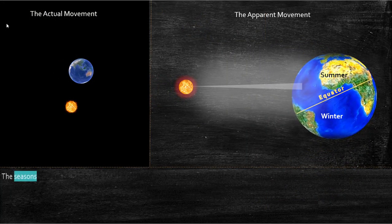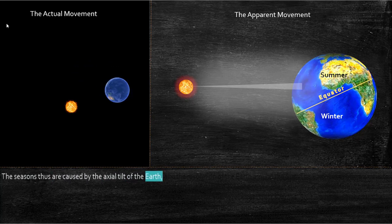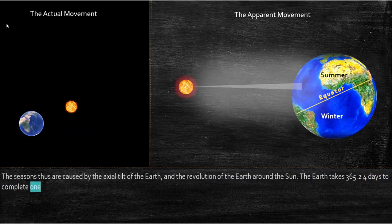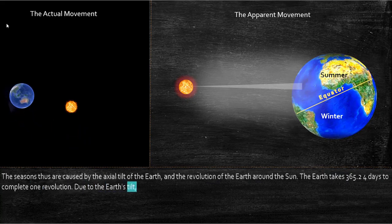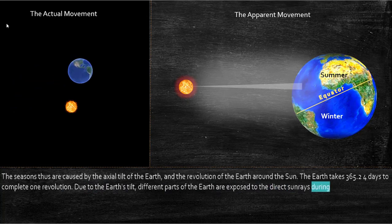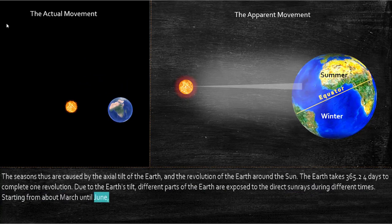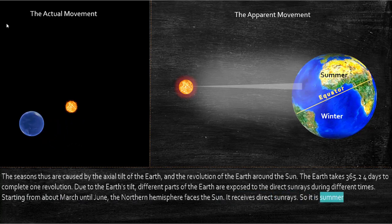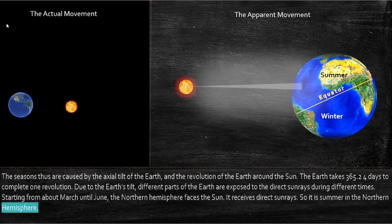The seasons are caused by the axial tilt of the earth and the revolution of the earth around the sun. The earth takes 365.24 days to complete one revolution. Due to the earth's tilt, different parts of the earth are exposed to direct sun rays at different times. Starting from about March until June, the northern hemisphere faces the sun and receives direct sun rays, so it is summer in the northern hemisphere.